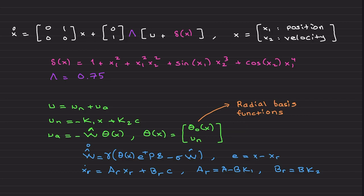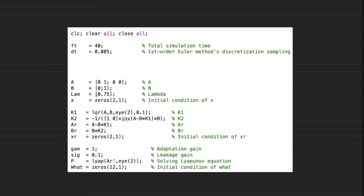Just a heads up, as I mentioned I am using sigma modification without loss of generality. If you like you can also use projection operator. This is the reference model. As a refresher this is AR matrix, this structure of the BR matrix. Jumping to the code, this code I am going to run for 40 seconds. I am going to discretize everything by first order Euler method and our sampling is 0.005 seconds. Here is the A matrix that you just saw, B matrix, lambda, initial condition for X. I am choosing K1 using linear quadratic regulator theory, K2 satisfying this condition, AR and BR here.